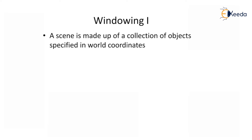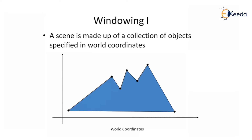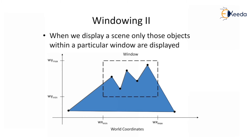A scene is made up of a collection of objects specified in world coordinates. When we display a scene, only those objects within a particular window are displayed. We draw an imaginary boundary like a rectangular window, having two boundaries: minimum and maximum. In the x-coordinate we have wx_minimum and wx_maximum, and in the y-coordinate we have wy_minimum and wy_maximum. Within those min-max values, we select a particular region of points or a scene which needs to be retained within the window.